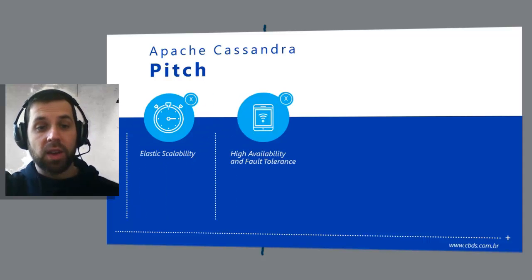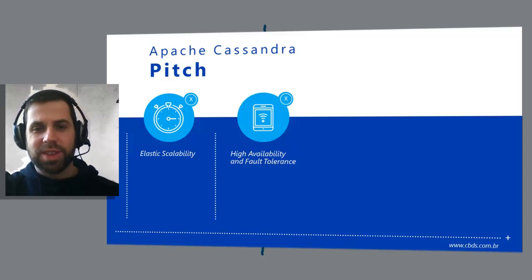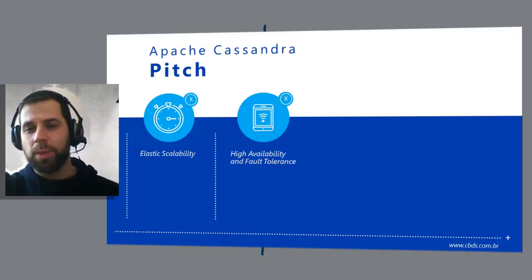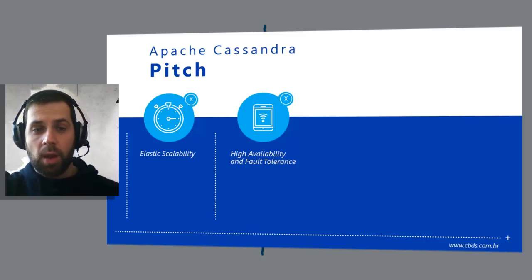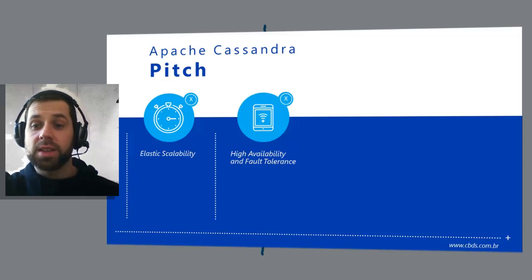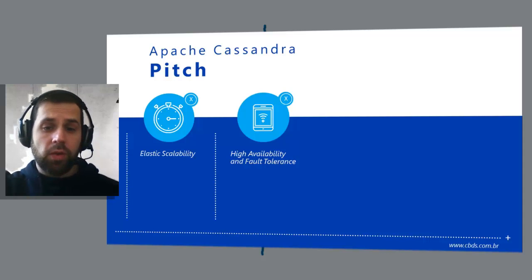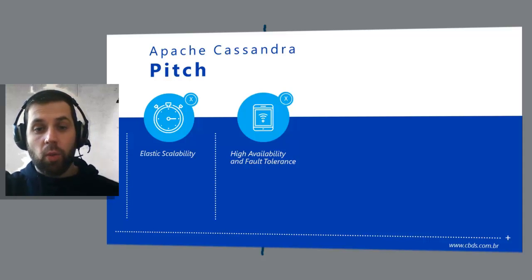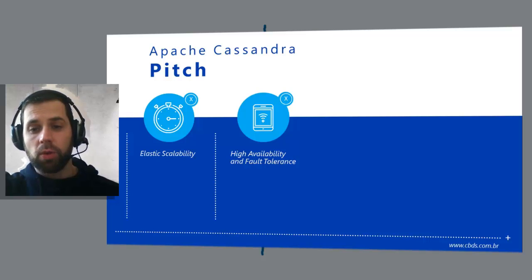High availability and fault tolerance. In general architecture terms, the availability of a system is measured according to its ability to fulfill requests. Computers can experience all manner of failure, from hardware component failure to network disruption to data corruption. Cassandra is highly available — you can replace failed nodes in the cluster with no downtime, and you can replicate data to multiple data centers to offer improved local performance.